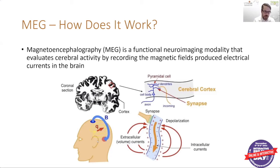Thinking back to high school physics, any electrical activity is going to produce a magnetic field. We use what we call the right-hand rule: using your right hand, if your thumb represents the direction of the electrical activity, then your fingers represent the direction of the magnetic field circling around that activity. So instead of measuring the electrical activity itself, the MEG is measuring the magnetic field produced by that electrical activity.